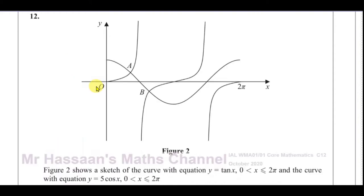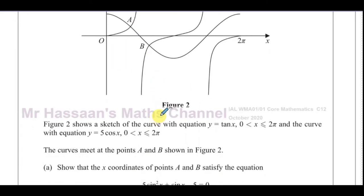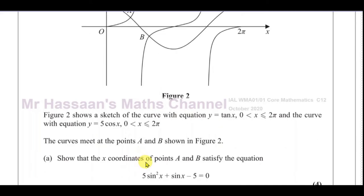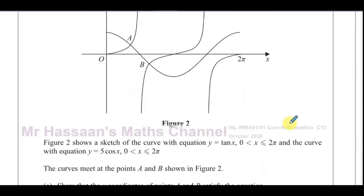This question shows us a figure with some graphs: a sketch of the curve with equation y = tan x, between 0 and 2π, and the curve with equation y = 5 cos x, again between 0 and 2π. The curves meet at the points A and B as shown in figure 2. We need to show that the x-coordinates of points A and B satisfy a given equation. Basically, A and B are the points where these two curves intersect.